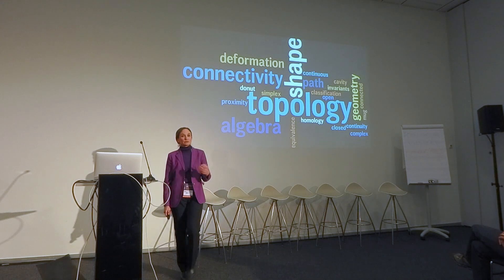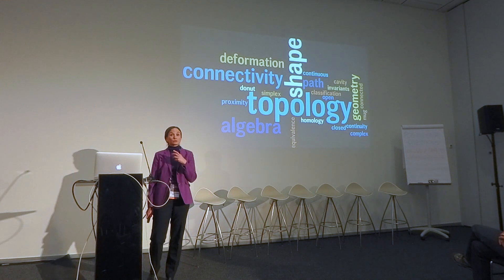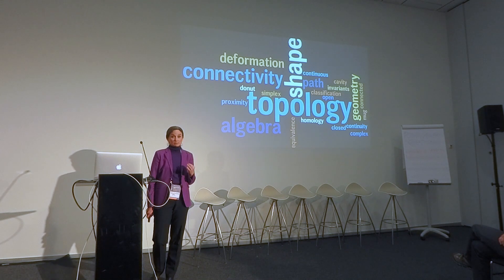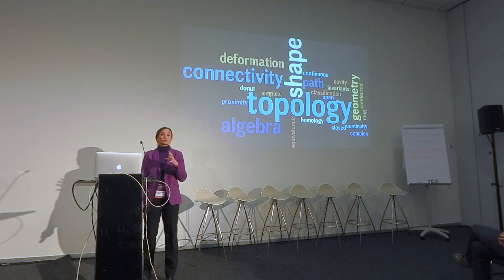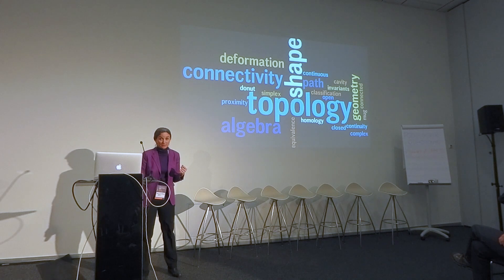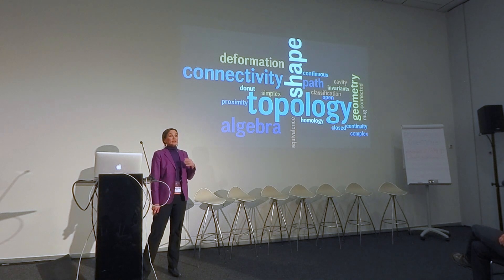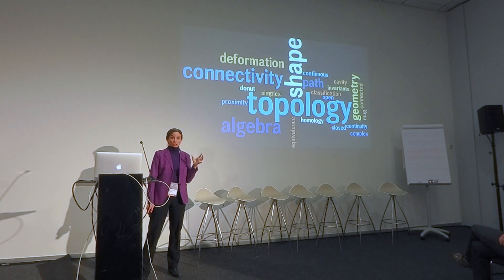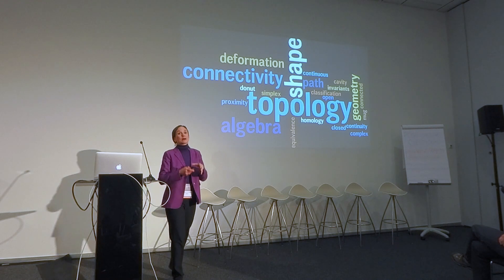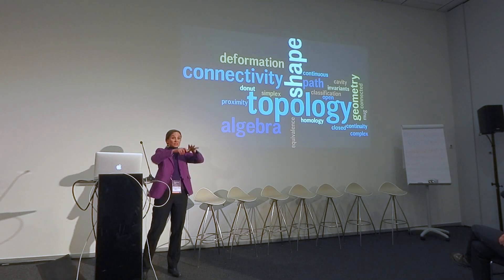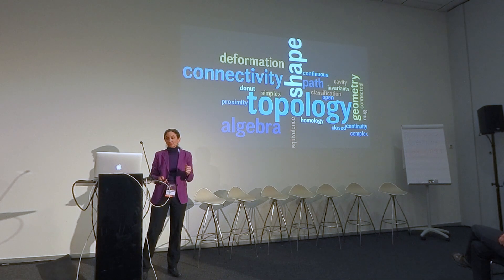A little bit about what topology is. I promised in the abstract of this talk that I would not assume you knew what topology was. Topology is the mathematics of shape. It's good for describing notions of connectivity — how things are connected together — for studying networks in particular. It's also a kind of mathematics that's particularly well adapted to studying local to global relationships. If I have a bunch of local information about a system, about a network, about a point cloud of data, how can I put those pieces together to get a more global image of what's going on?